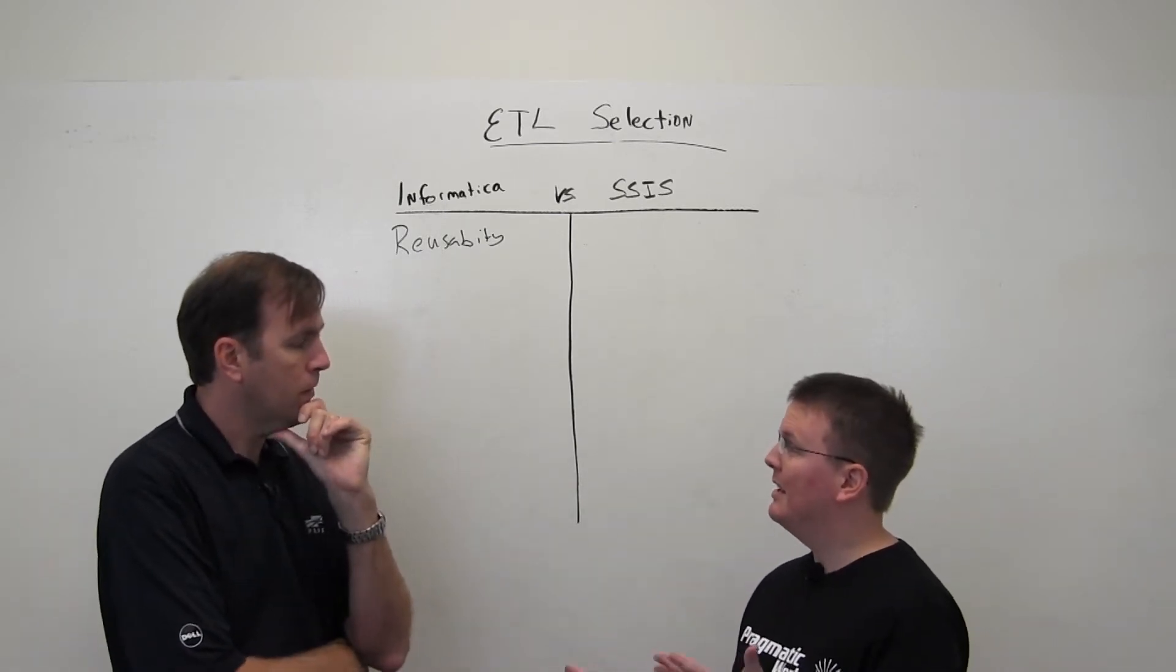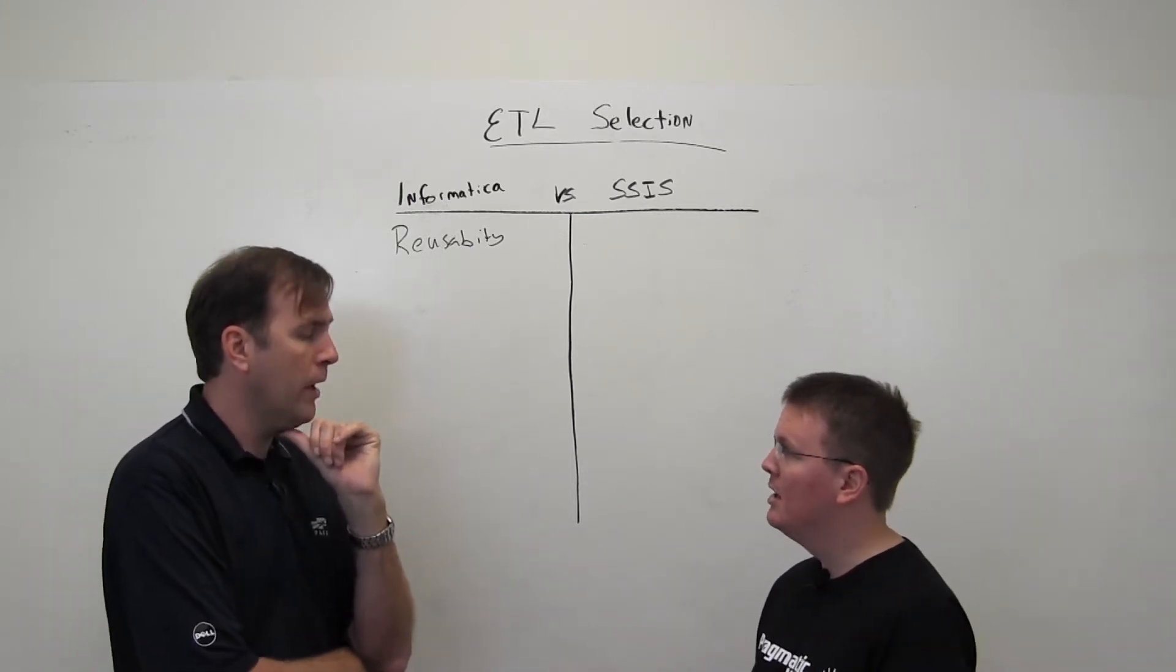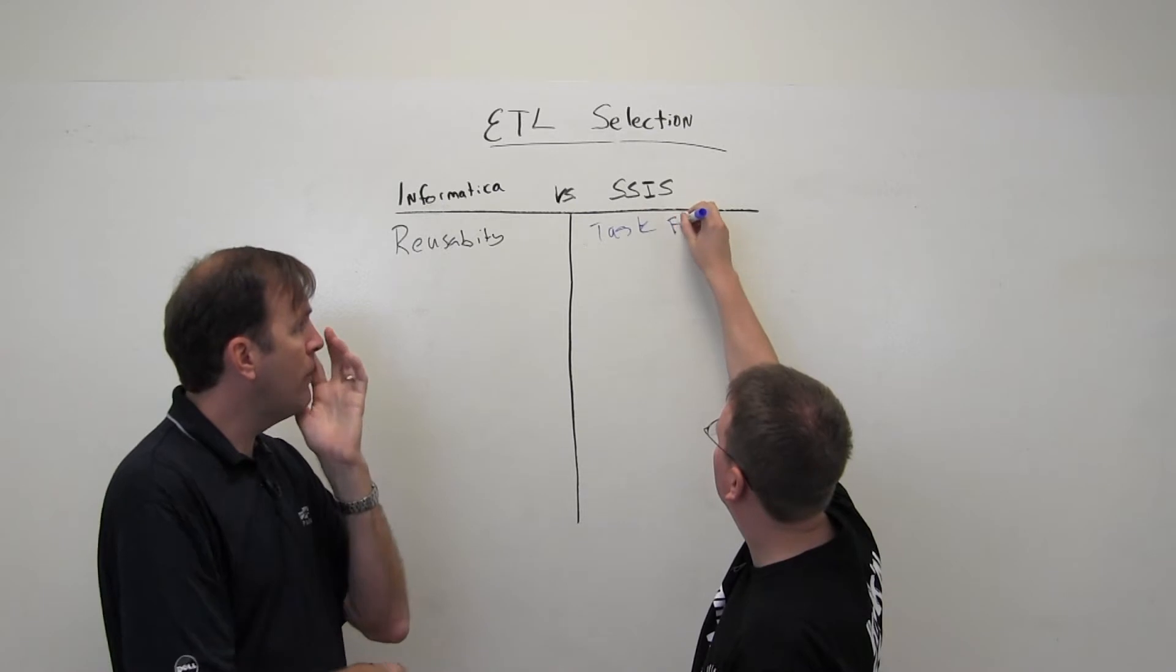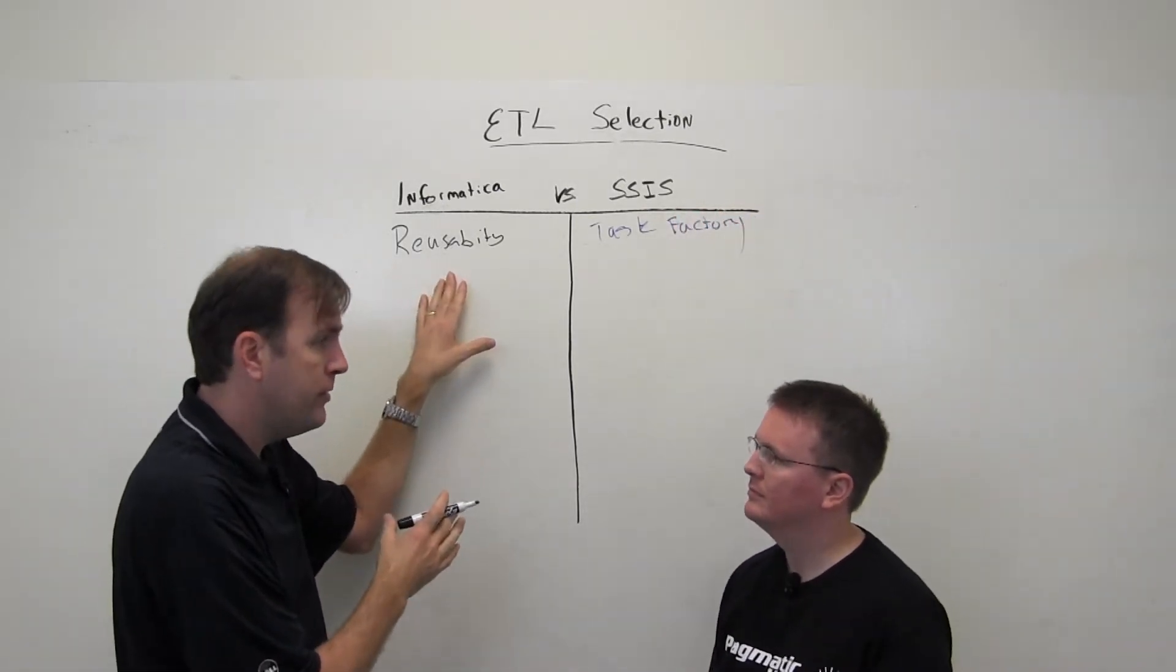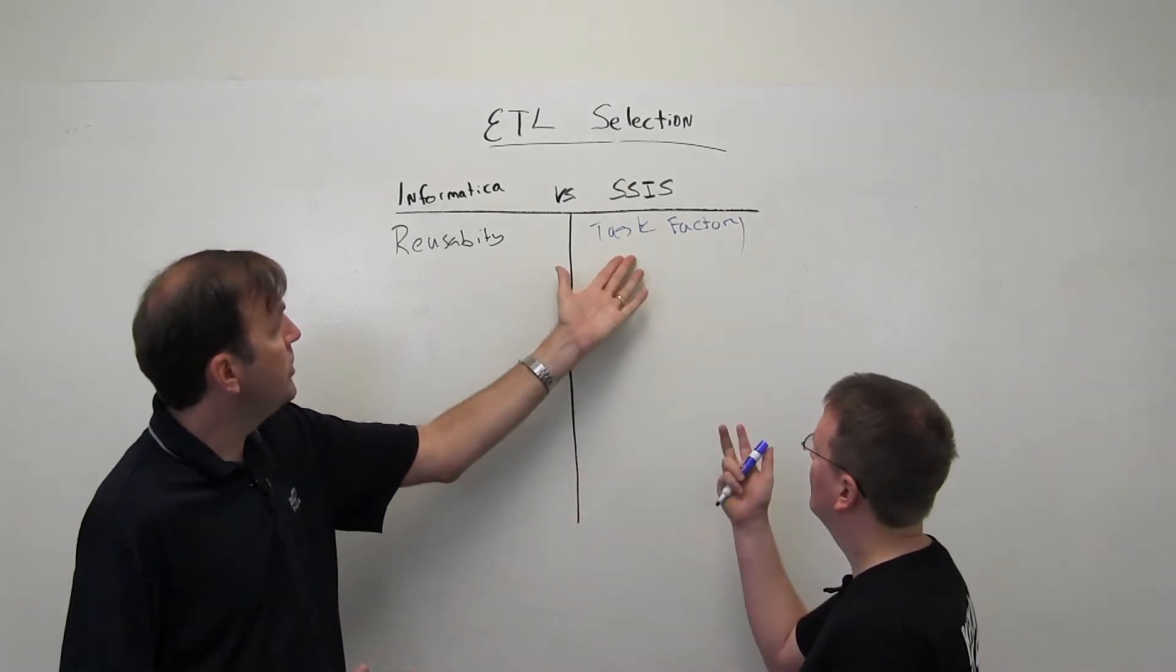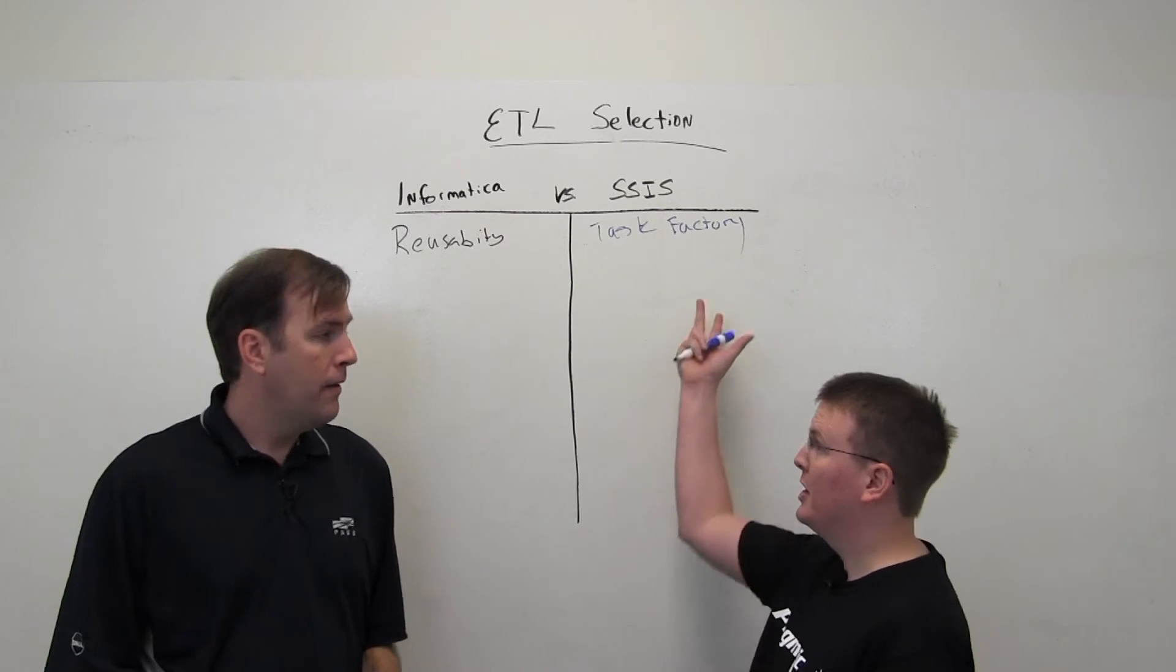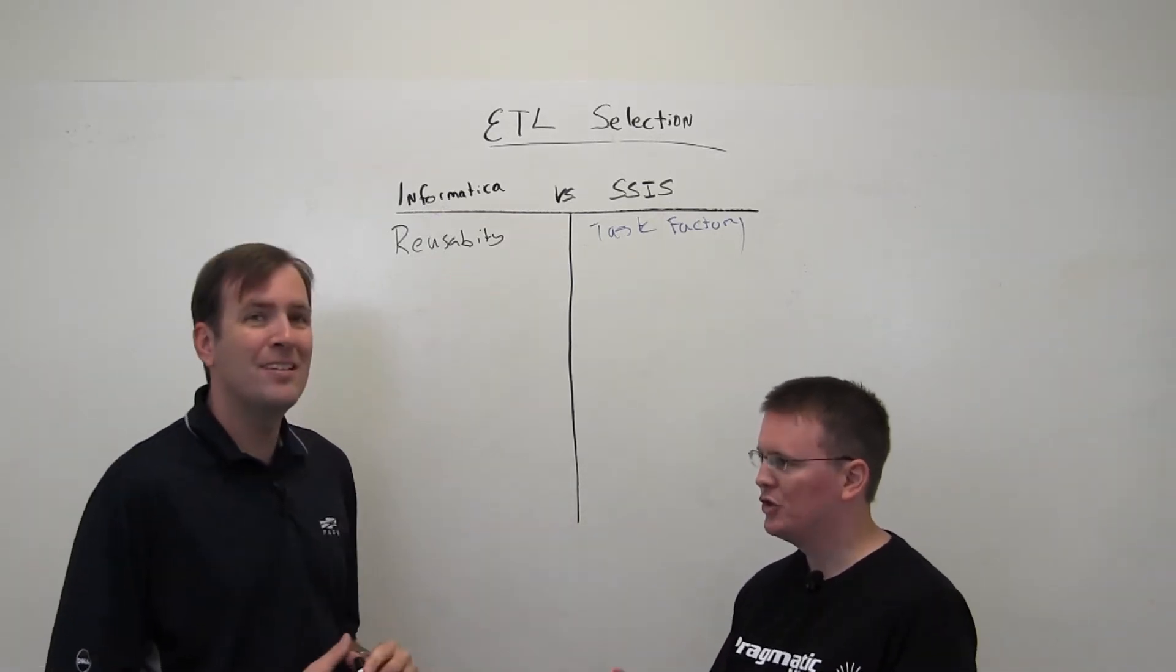SSIS definitely has some capabilities outside in some other vendors. For example, our company, Pragmatic Works, actually sells a tool called Task Factory, which has a component that's very similar to that called Dataflow Nuggets. So I'll have my counterpoint there to that. For reusability, what's nice about the Informatica side here, their feature's called Maplets. They'll let you do some mappings, and basically you can reuse those mappings over and over again.